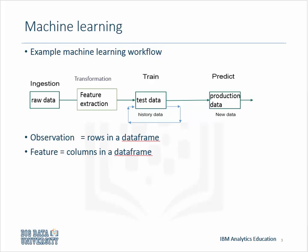An observation is used to learn about or evaluate an item's target value. Spark models observations as rows in a data frame. A feature is an attribute of an observation. Spark models features as columns in a data frame.